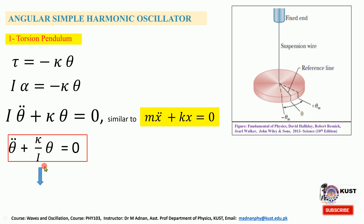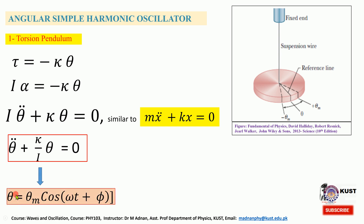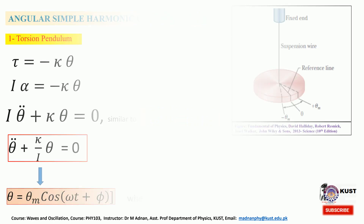Rearranging this equation: instead of x = xm cos(ωt + φ) we have θ = θm cos(ωt + φ), where θm is the maximum rotational displacement from the equilibrium position where θ = 0. The angular frequency is now √(κ/I), whereas previously we had √(k/m) with k being the spring constant and m being the mass. For the torsional pendulum we will be solving these equations.